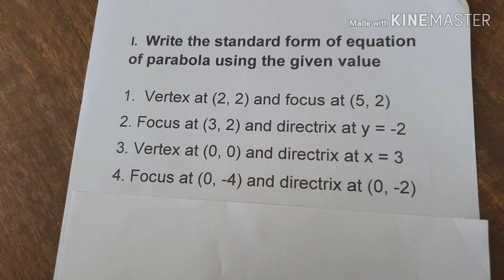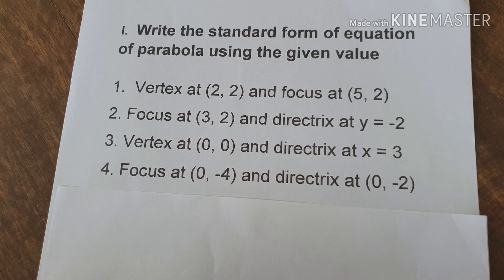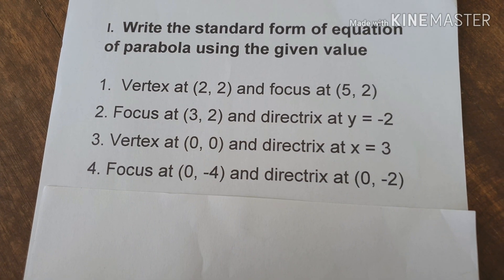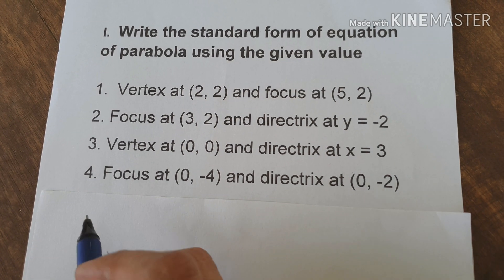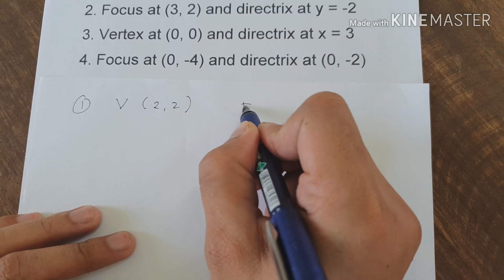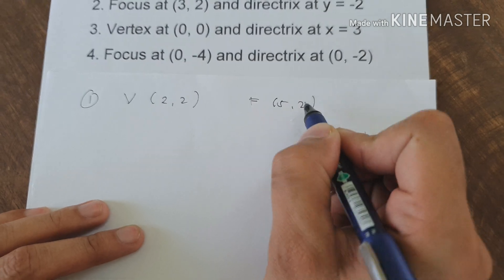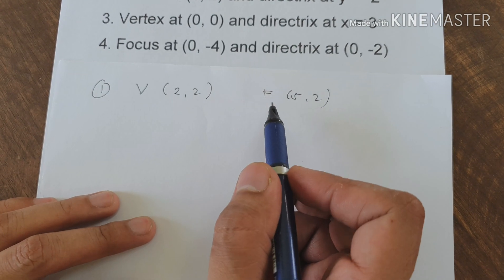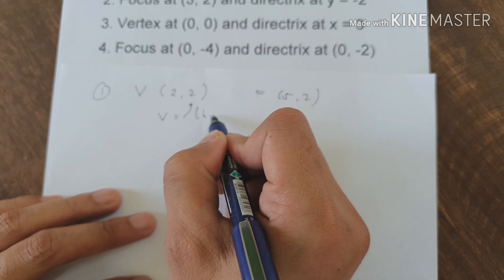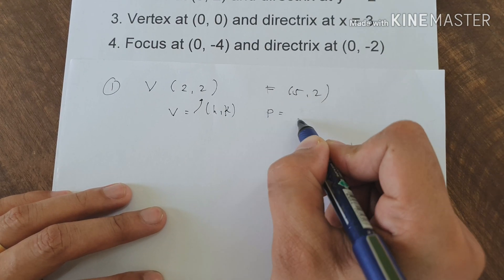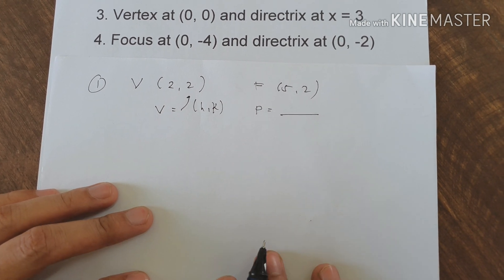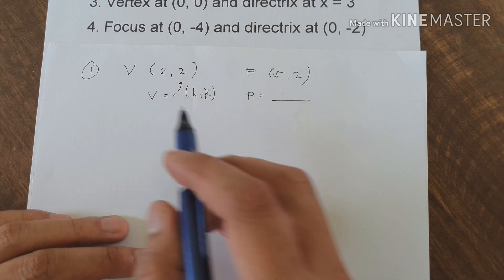For the first example, we are going to write the standard form of equation of a parabola using the given values. For number one, we have a vertex at (2, 2) and focus at (5, 2). To write the equation in standard form, we are looking for the vertex (h, k) and the value of p — the distance between focus and vertex. Let us plot the given values on the coordinate plane.